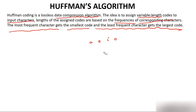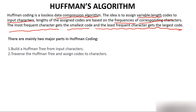Now, how to proceed toward the algorithm. There are two major parts of Huffman Algorithm. First, you have to build the Huffman tree. And then after you build the Huffman tree, you will traverse it and assign codes. So the first task is to build the tree, and then assign the codes by traversing the tree. The main part is how to build the tree and what kind of tree a Huffman tree is.